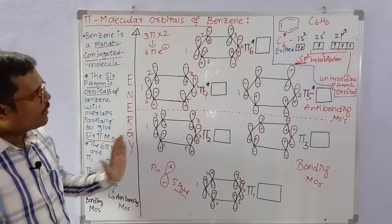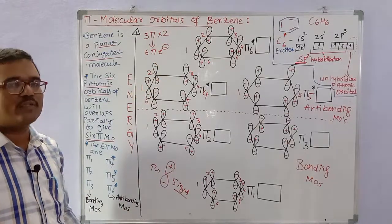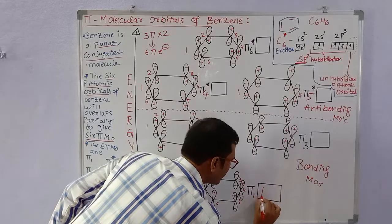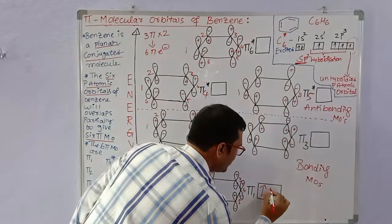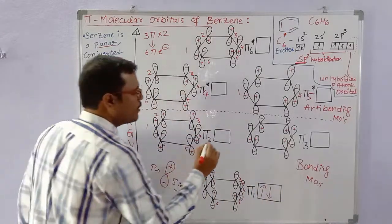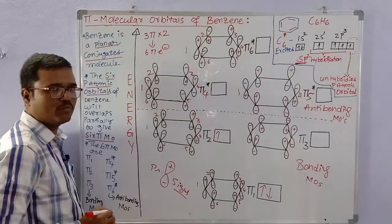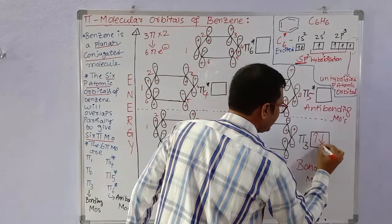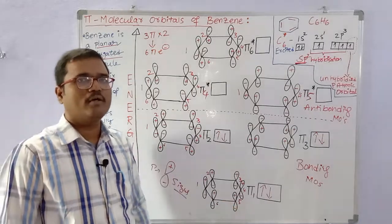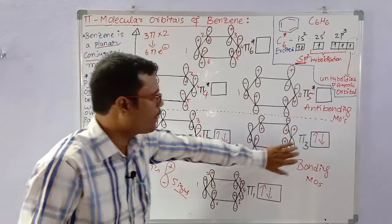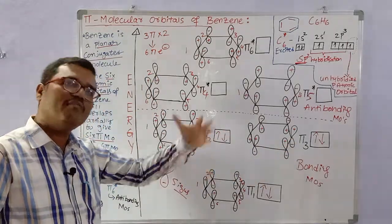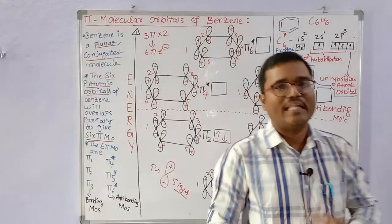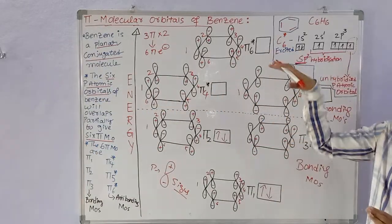With 6 pi electrons to fill: pi1 is lowest energy so 2 electrons fill it first. The third and fourth electrons enter pi2, and the fifth and sixth electrons enter pi3. So the 3 bonding molecular orbitals pi1, pi2, and pi3 are completely filled with 6 pi electrons, while pi4*, pi5*, and pi6* anti-bonding molecular orbitals remain empty due to their high energy.